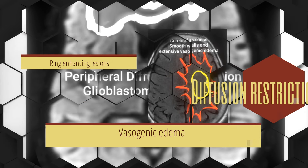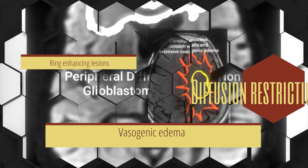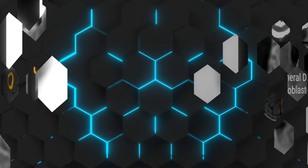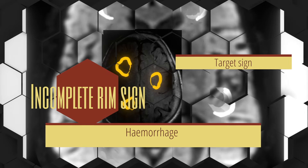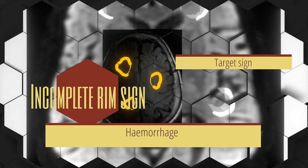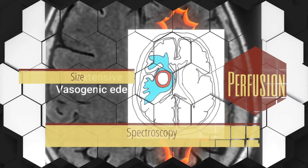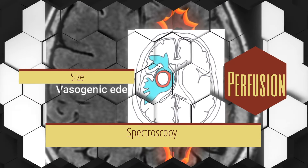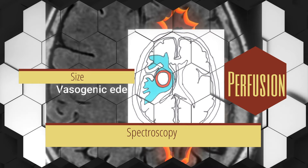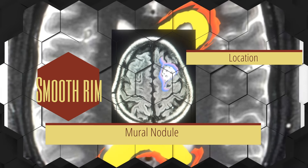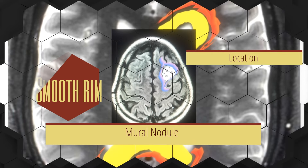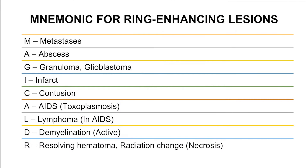Precision in diagnosis requires practice and knowledge of conventional and advanced neuroimaging applications. Looking at vasogenic edema, diffusion restriction, presence of hemorrhage, and certain signs called the incomplete ring sign and target sign will all help us in narrowing the differentials. Advanced neuroimaging applications like perfusion and spectroscopy can give invaluable information. Enhancement characteristics, presence or absence of a mural nodule, and the location of the lesion are also very important.